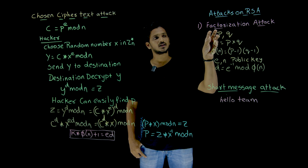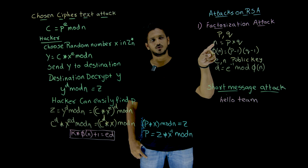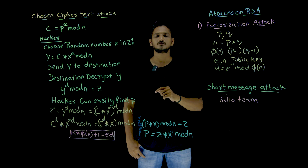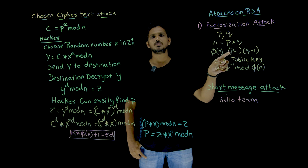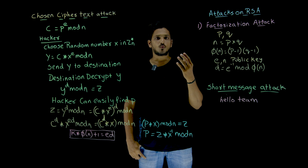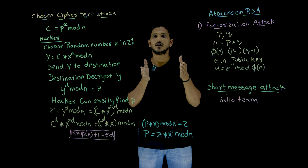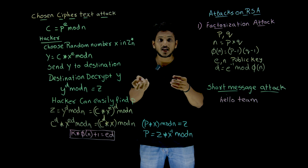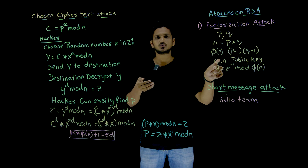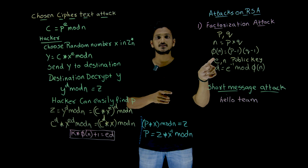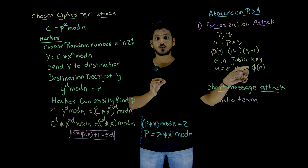What we have done in RSA? We have to generate two prime numbers, let us say P and Q. From P and Q, you are going to generate the N value. N is equal to P multiplied by Q. Based on this N, we need to identify Phi of N. Phi of N can be identified using P minus 1 multiplied by Q minus 1. Once you find the Phi of N, from the set that belongs to Phi of N, we are going to select E. E is the public key — E comma N are sent as the public key. And D is the inverse of E; that is, D is equal to E inverse mod Phi of N.